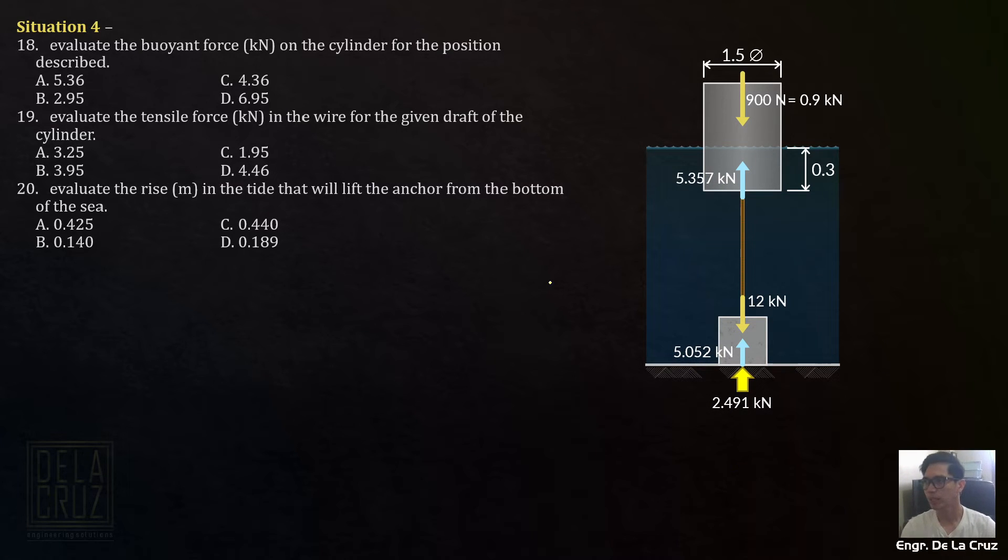Part 1. Buoyant force on the cylinder for the given position or the position described. That's the 5.357. That's the FB1 we calculated earlier.